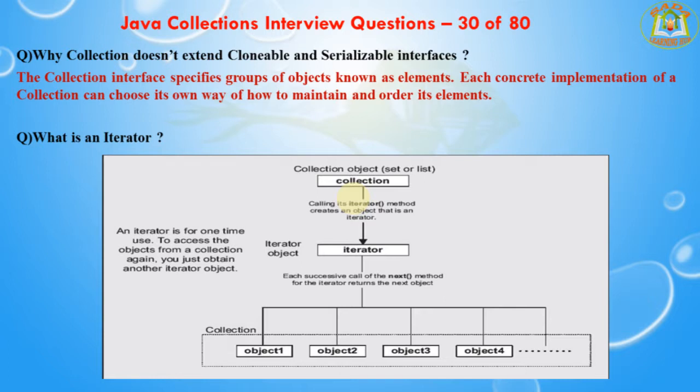The next question is: what is an Iterator? The Iterator interface provides a number of methods that are able to iterate over any collection. Each Java collection contains the iterator() method that returns an Iterator instance. Iterators are capable of removing elements from an underlying collection during the iteration.